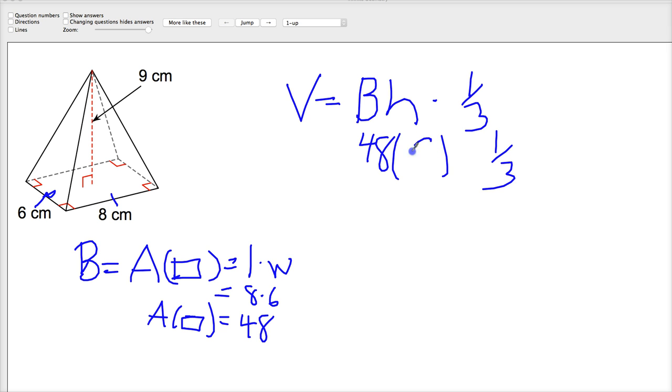Now I have all the parts that I need: 48 times 9 times one third, or you can just see 48 times 3, which is 144. Remember that volume is a three-dimensional measurement, so 144 centimeters cubed.